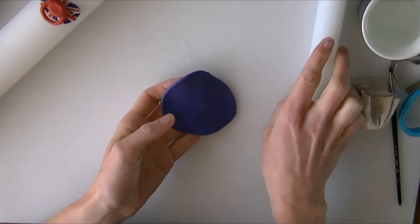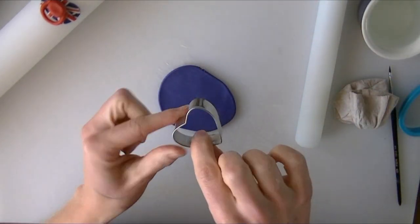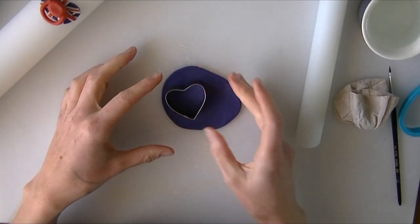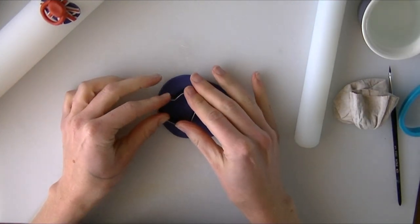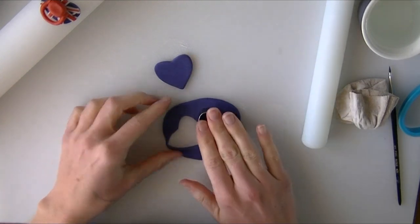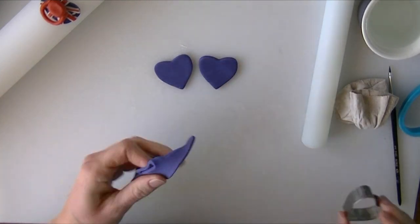I'm going to use a heart-shaped cutter. I've just got quite a small one. You might want to go for them a little bit bigger than what I've done them. I'll just cut a couple out because I'll show you them with different colored middles as well.